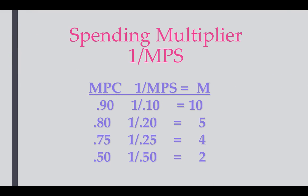Here you can see a chart with the multipliers. If the MPC is 0.9, then 1 over MPS is 1 over 0.1, which equals a multiplier of 10. Going down the line, as we consume slightly less, our multiplier goes down slightly: 10, 5, 4, and 2.